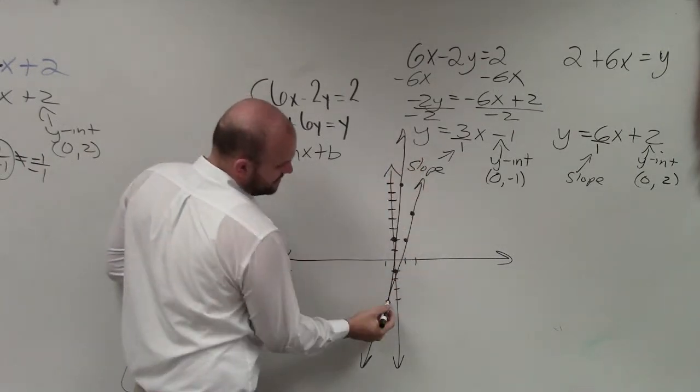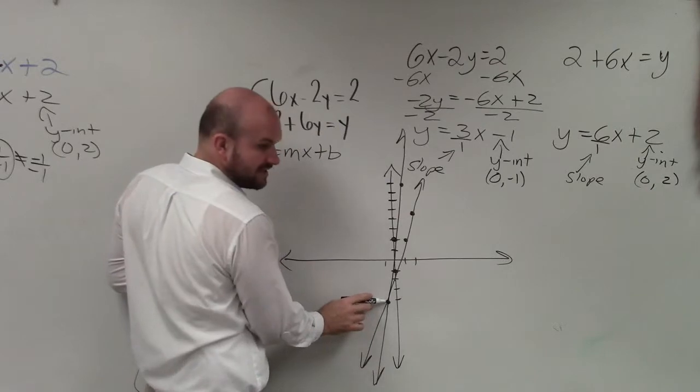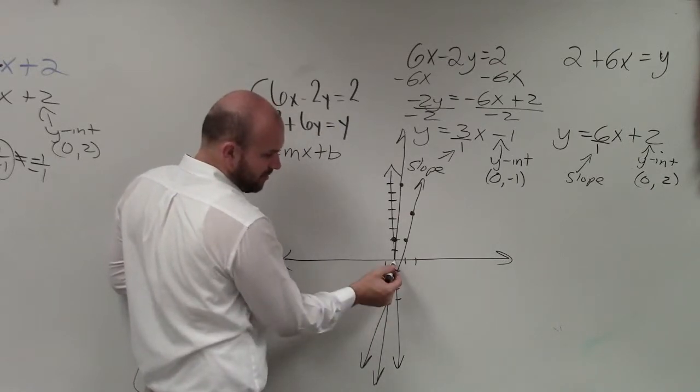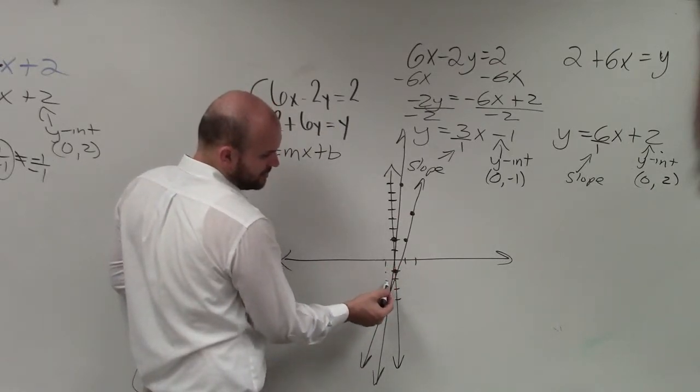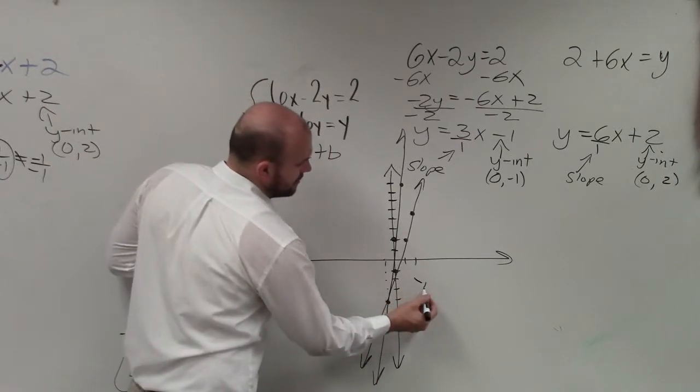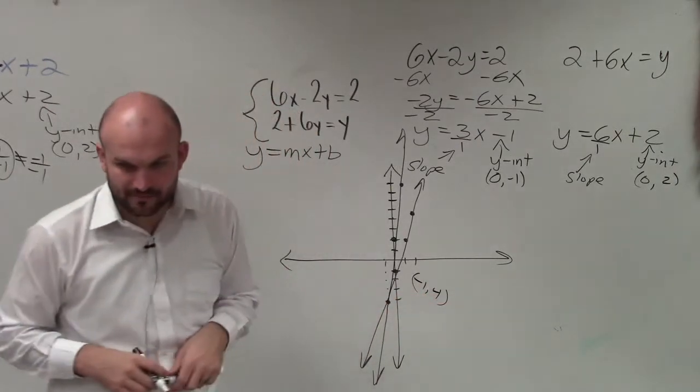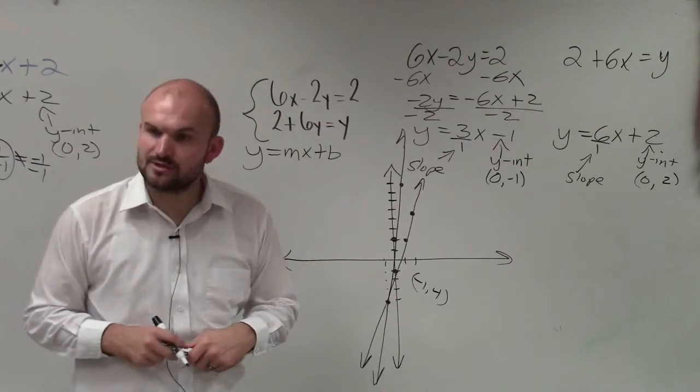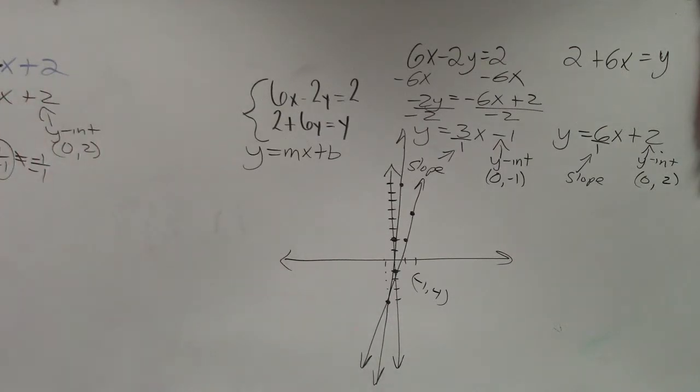So what I want you guys to notice is that these graphs, that these two lines intersect at the coordinate point negative 1, 1, 2, 3, 4. Do you guys agree that that is their intersection? So that is your solution.